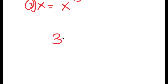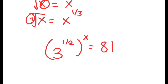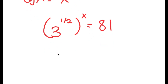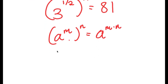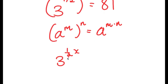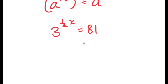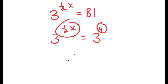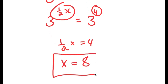Substituting 3 to the power of 1 half for square root of 3, I get 3 to the power of 1 half to the power of x equals 81. Using the rule a^m to the power of n equals a^(m·n), this becomes 3 to the power of 1 half x equals 81. Since 81 is 3 to the power of 4, I get 1 half x equals 4, meaning x equals 8.